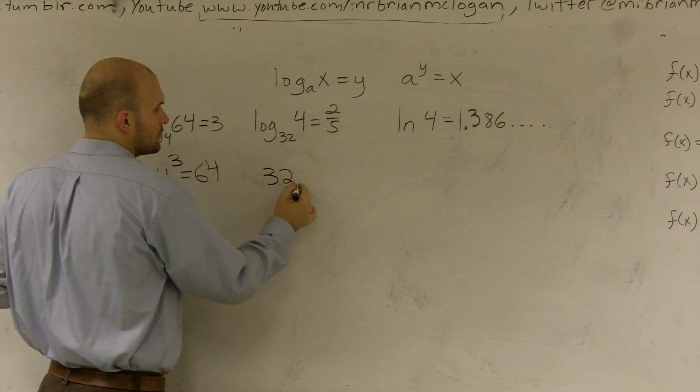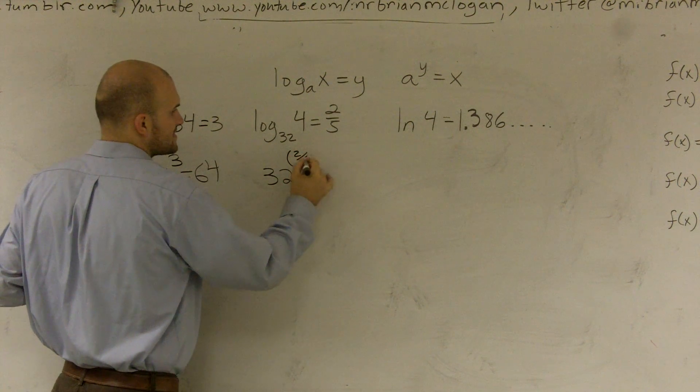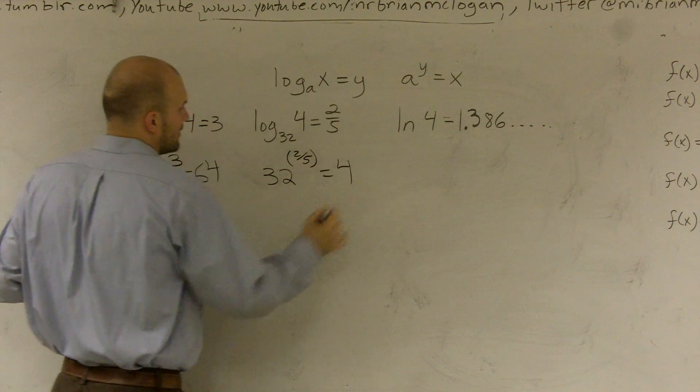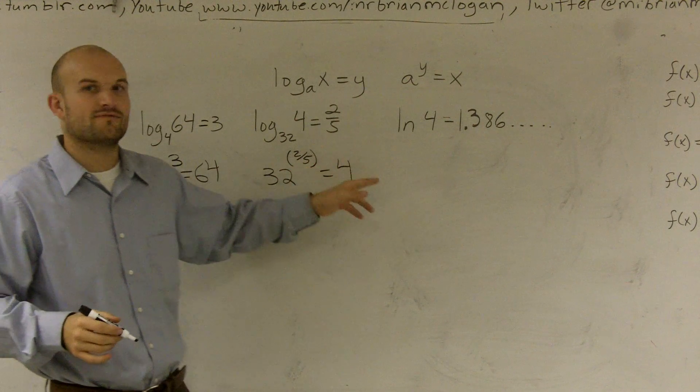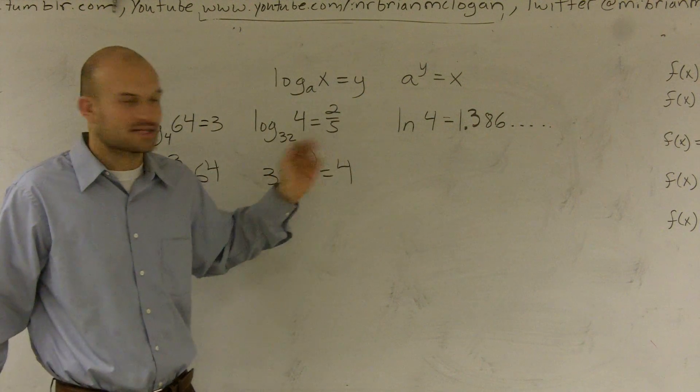Here we have 32 raised to the 2 fifths equals 4. And obviously, since 32 is larger than 4, you're going to have to raise it to a fractional exponent.